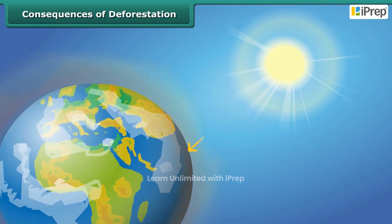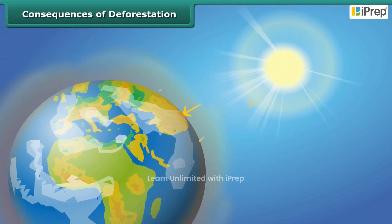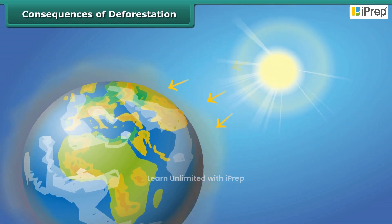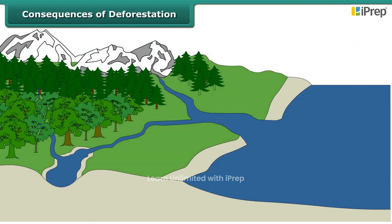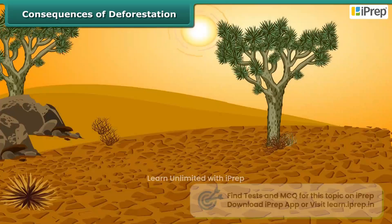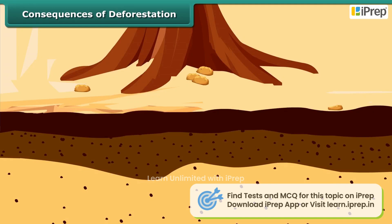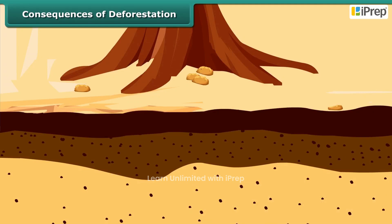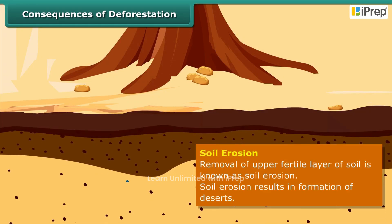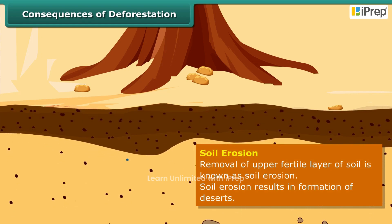The increase in temperature on the earth disturbs the water cycle and may reduce rainfall. This could cause droughts. Soil erosion is another consequence — fewer trees result in more soil erosion and removal of the top layers of the soil.